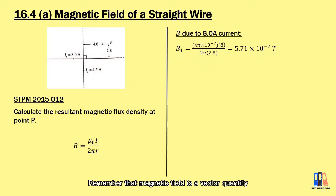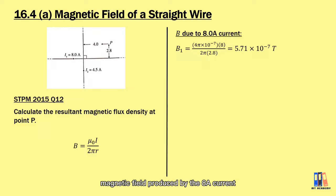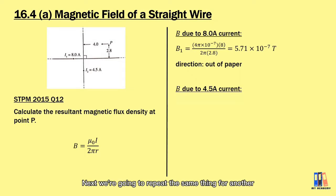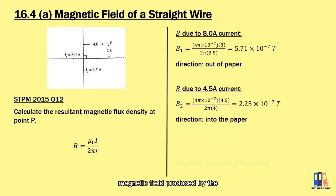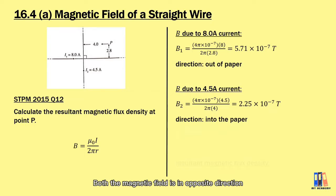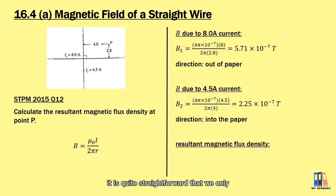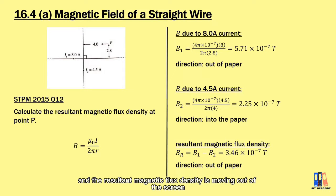Remember that magnetic field is a vector quantity, so use the right-hand grip rule to identify the direction. For this case, the magnetic field produced by the 8-ampere current at point P is moving out of the screen. Next, we repeat the same for the 4.5-ampere current. Substituting all values, we get 2.25 × 10⁻⁷ tesla, and applying the right-hand grip rule, the magnetic field produced by the 4.5-ampere current is moving into the screen at point P. Since both fields are in opposite directions, the resultant magnetic flux density is B₁ − B₂ = 3.46 × 10⁻⁷ tesla, directed out of the screen.